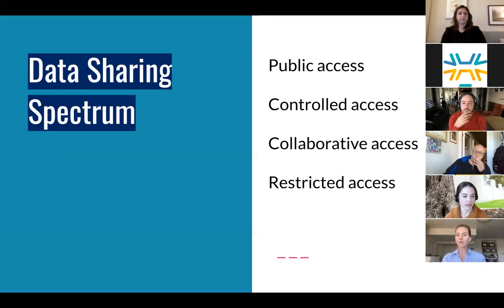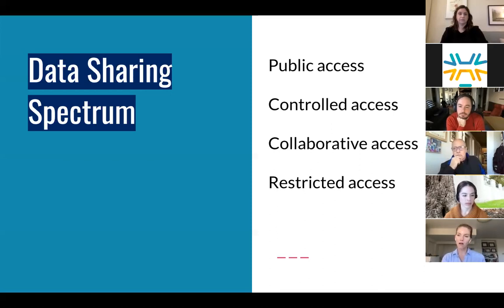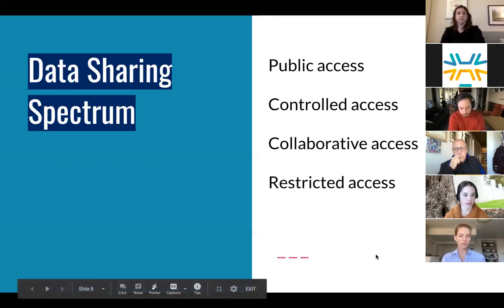You could also offer collaborative access among scientists or researchers who are of a particular research network — sharing it through a reasonable request. Or finally, you could restrict access only to primary researchers, such that the data are available only to the research team involved in the data collection process and potentially any institutional partners.